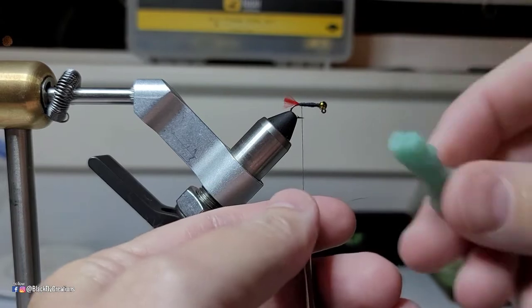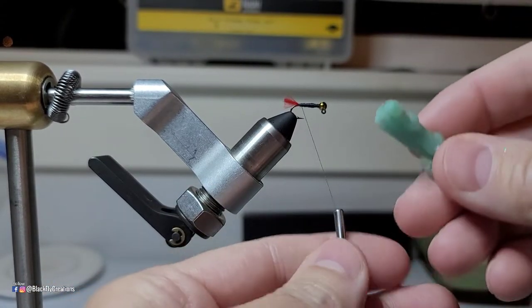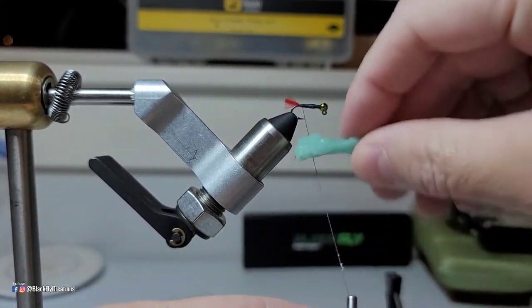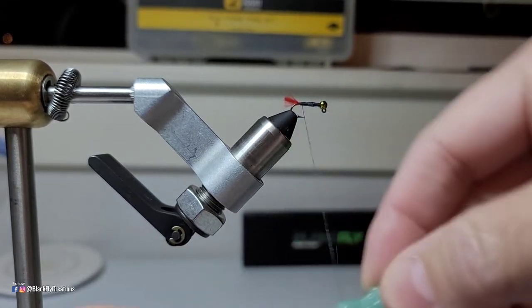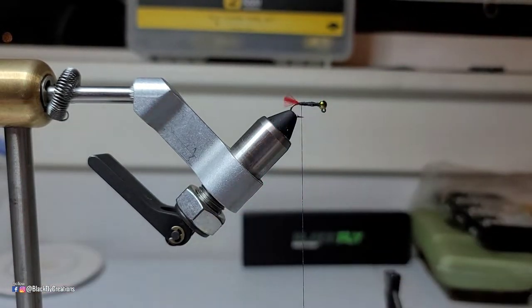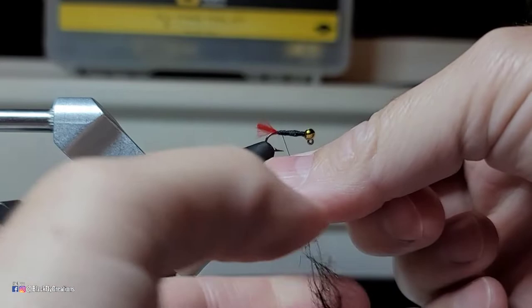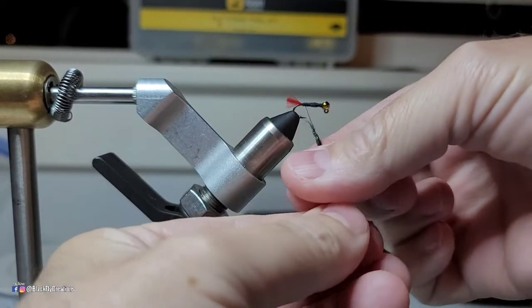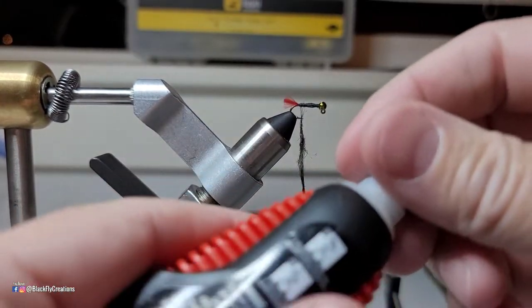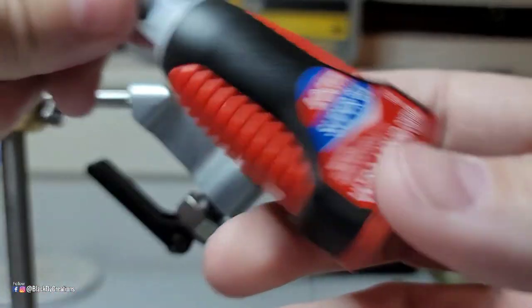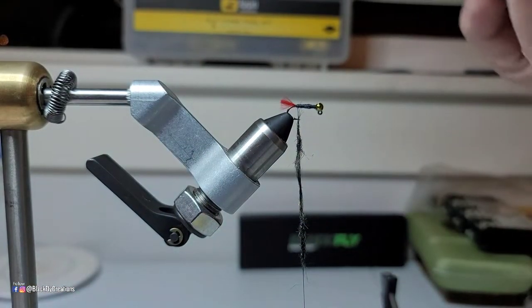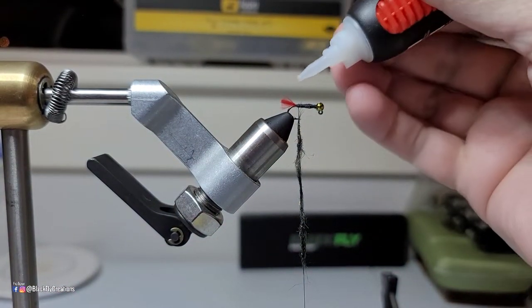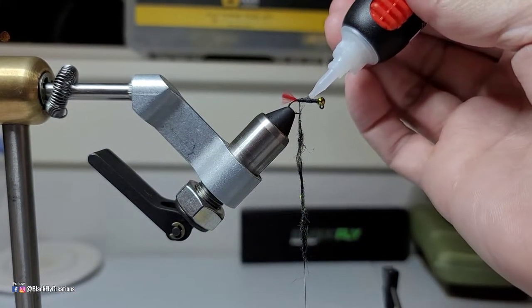So next what I like to do, I don't have fly tying wax so this works. This is just candle wax. So we're going to create a little dubbing noodle. I've created my dubbing noodle. Now what I'm going to do is I'm going to take a little bit, just for durability, I just want a tiny bit of super glue.